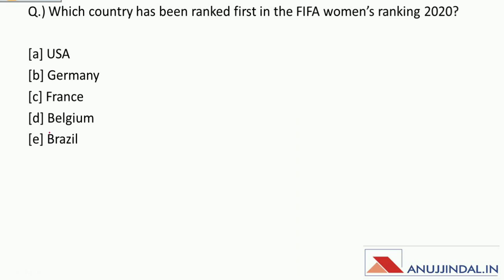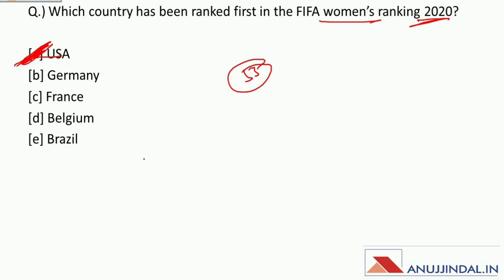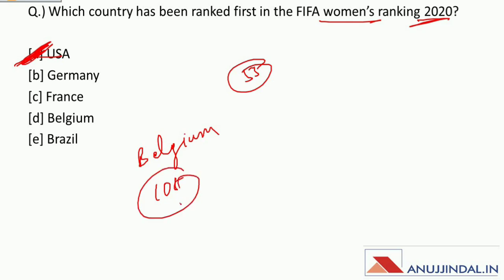Which country has been ranked first in the FIFA Women's Ranking 2020? USA has been ranked first. India's rank in the women's section is 55. In the men's overall ranking, number 1 is Belgium, and India's rank is 108.